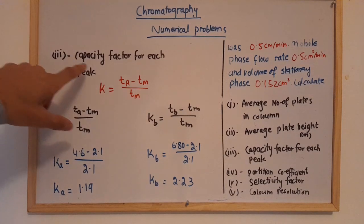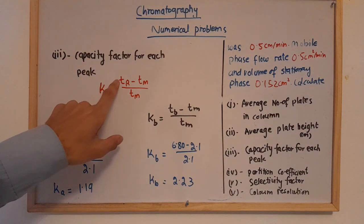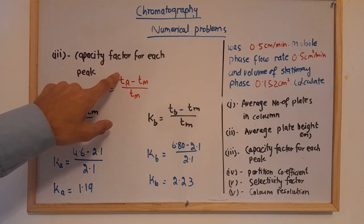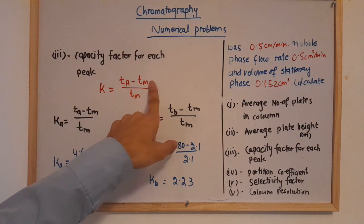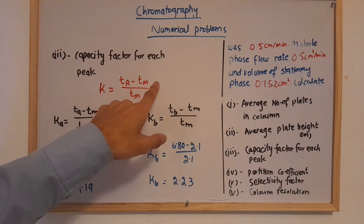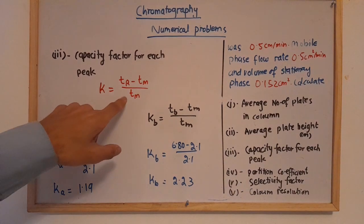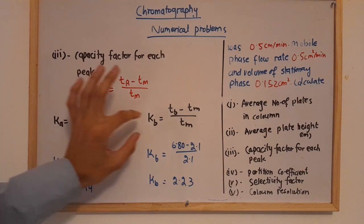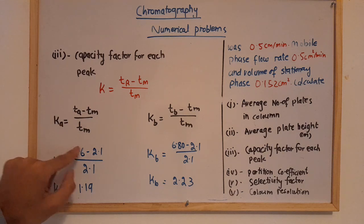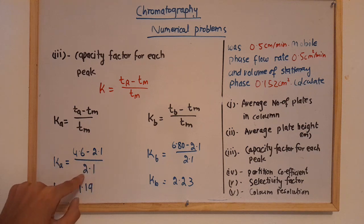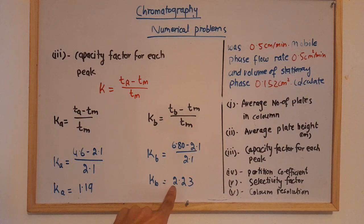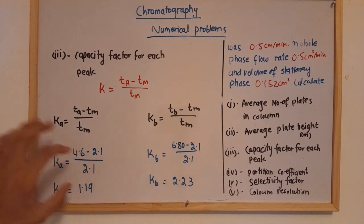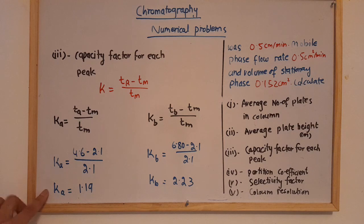For the capacity factor of each peak, use the formula k = (tr − tm)/tm, where tm is the retention time for the unretained species, given as 2.1 minutes. For compound A: (4.6 − 2.1)/2.1 = 1.19. For compound B: (6.80 − 2.1)/2.1 = 2.23. So ka = 1.19 and kb = 2.23.